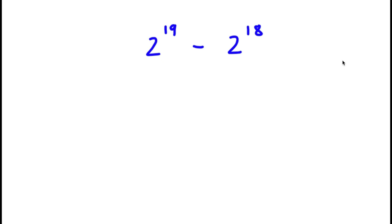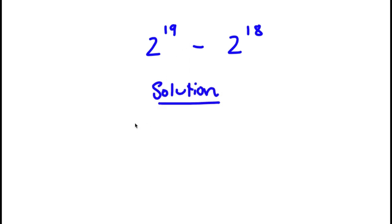So in this problem, I have 2 to the power of 19 minus 2 to the power of 18. For my solution, I'll first start with 2 to the power of 19 minus 2 to the power of 18.